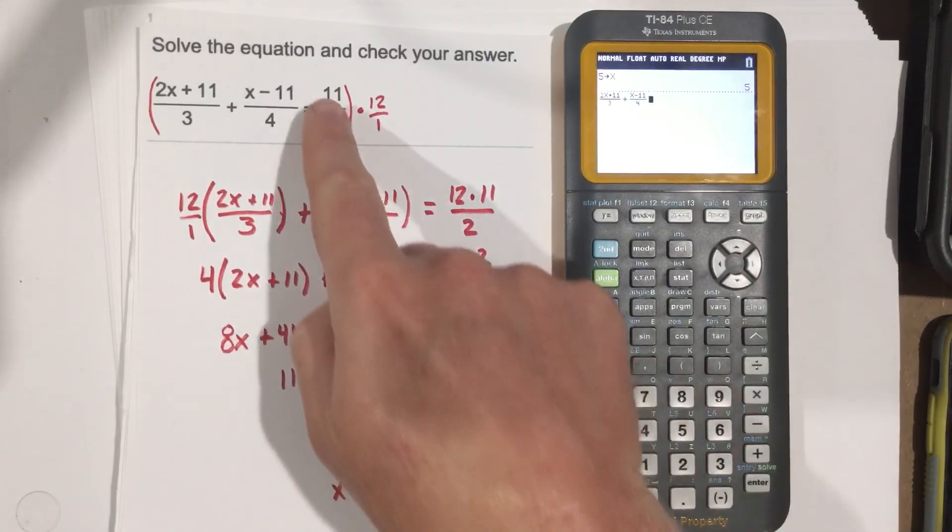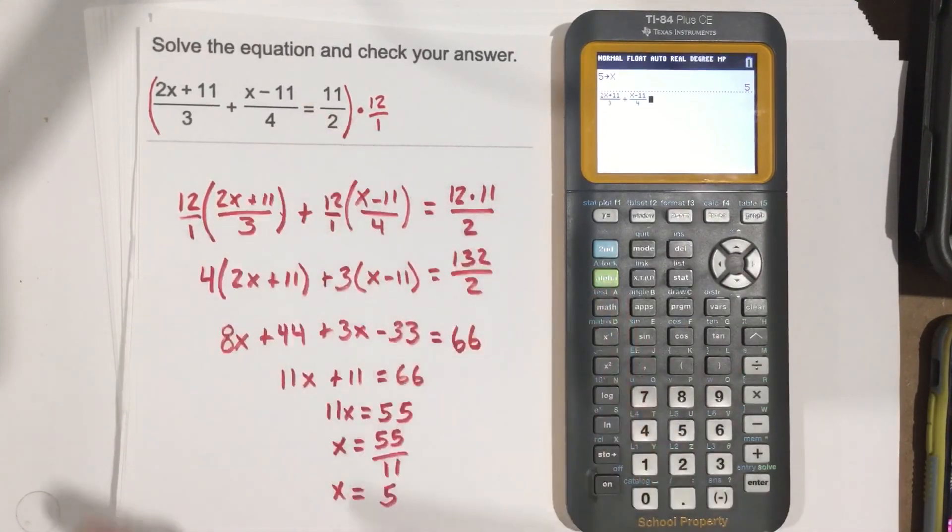If it equals 11/2, which is 5.5, we'll see that in a second. Well, it just gave us 11/2. So we know that this worked out. That's our solution.